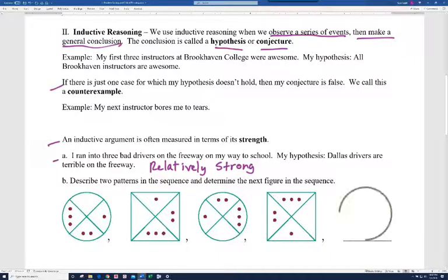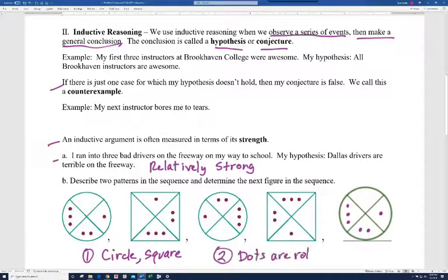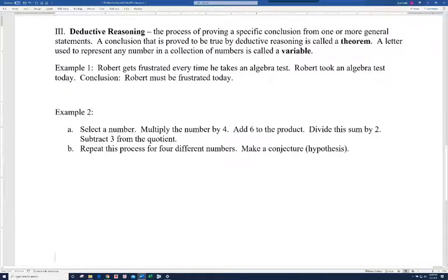Alright. So your next figure should look like that. And in fact, there's two patterns going on here. One, you're doing circle, square, circle, square, and so on. And two, the dots are rotating counterclockwise. So notice that the dot here, if you rotate it up 90 degrees, basically, now you're here. And this one here goes to there and now you're there. And so the dots are rotating 90 degrees counterclockwise. Alright. Let's move on to the next slide.